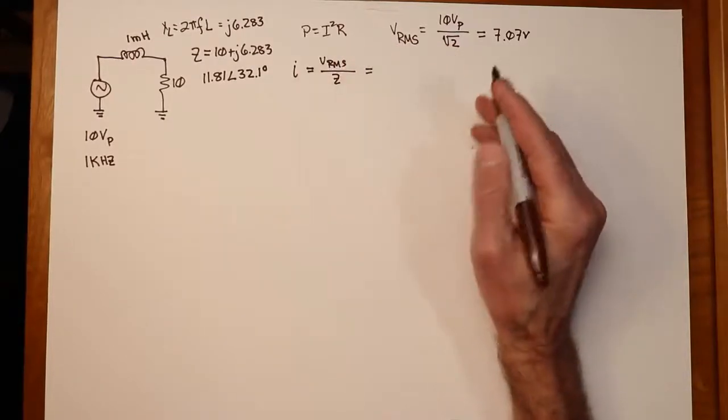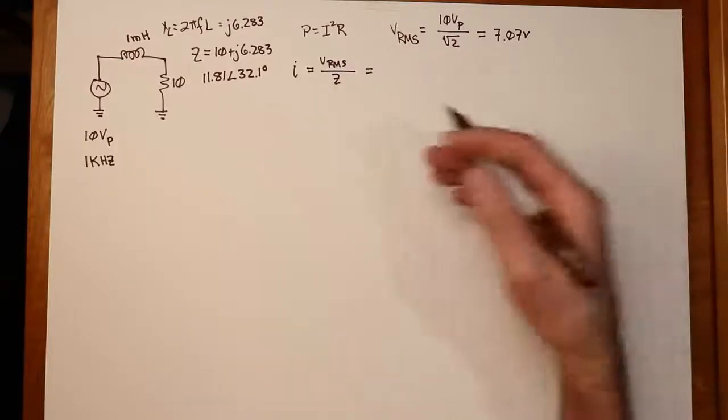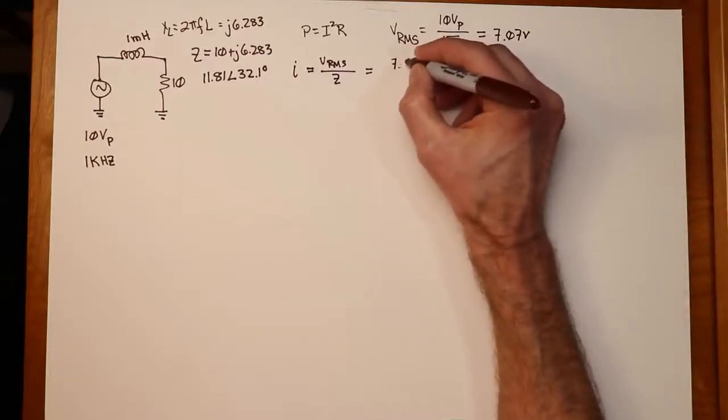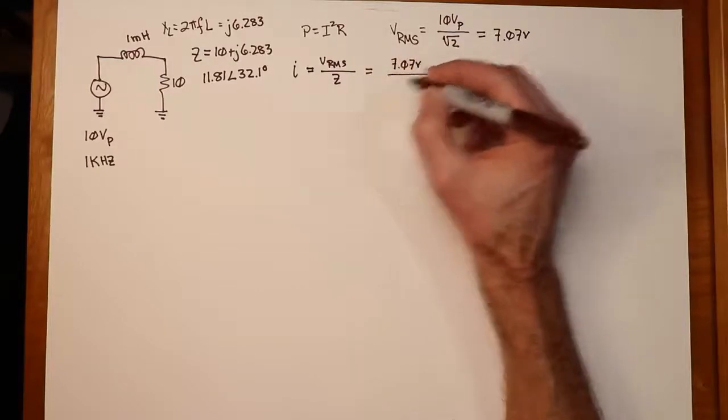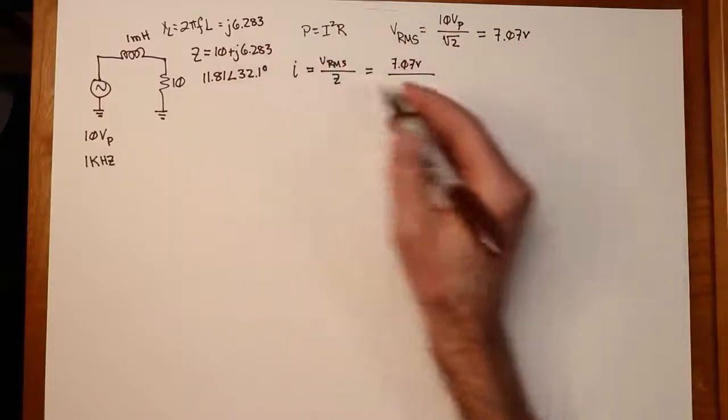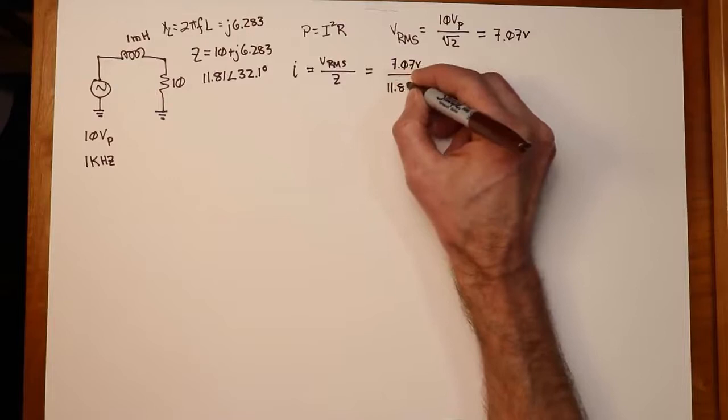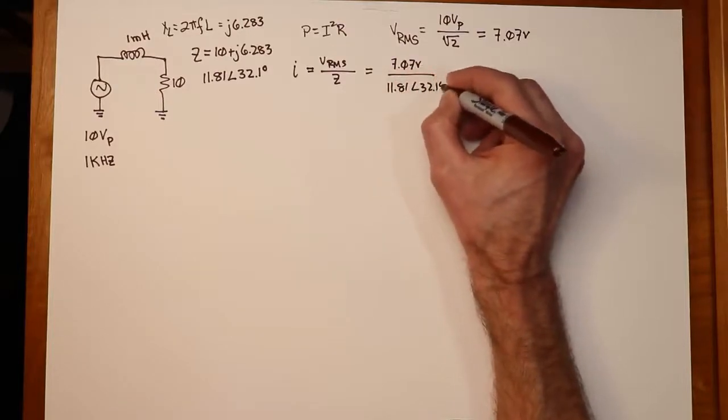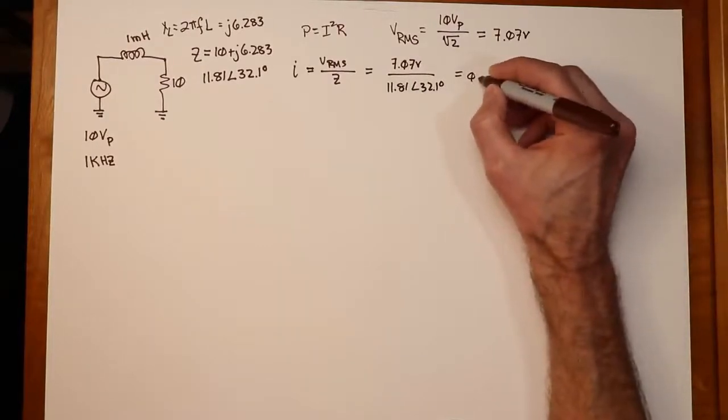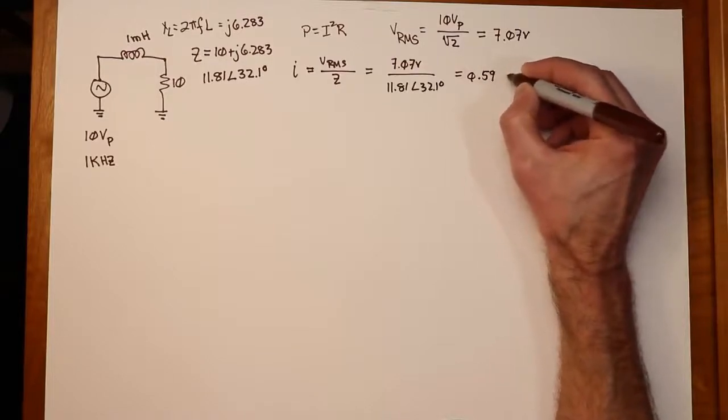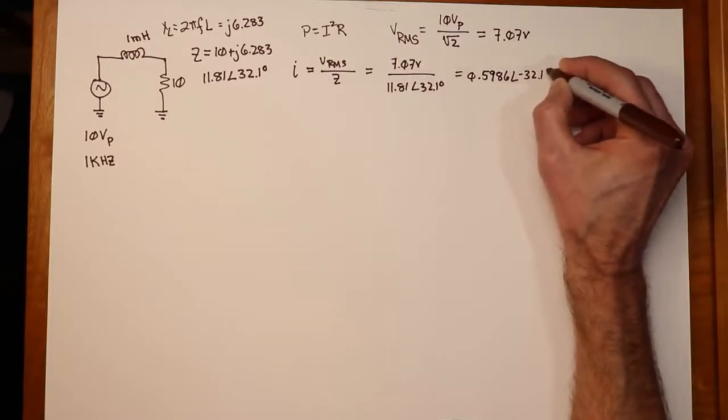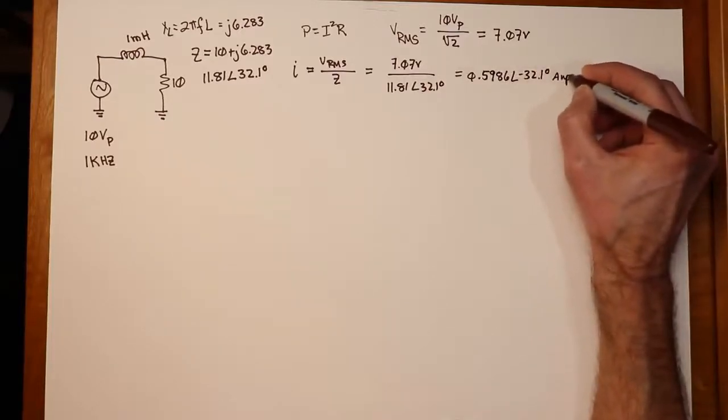Now we can take that and divide it by the impedance in the system to find out what the circulating current is. So we simply take V_RMS, this will give us an RMS current of course, divided by Z. Now in this case, we can of course determine the current angle, but for the power calculation, we really only need the magnitude of it. But in any case, continuing along here, I'll take our 7.07 volts. We're going to divide that by the impedance. You can either do that as 10 plus j6.283 or 11.81 at an angle of 32.1, your choice. And the RMS current we get out of that is 0.5986, and obviously the angle here is going to be a negative 32.1 degrees. So that's our RMS current in amps.